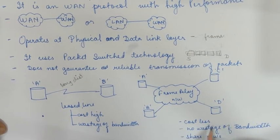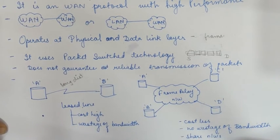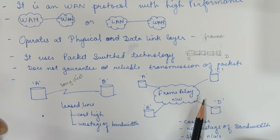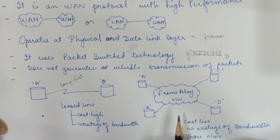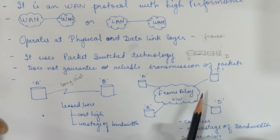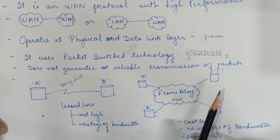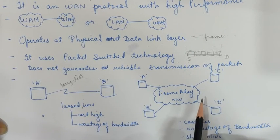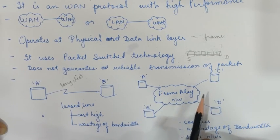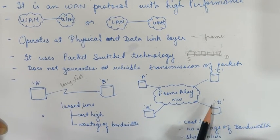In frame relay, you can communicate over long distances, but it also shares connections — meaning the bandwidth and network are shared. There is no wastage of bandwidth. The service provider manages and allocates specific bandwidth to specific cities or networks. Frame relay is very handy for sharing the network, and if you need more bandwidth, you simply pay more to the service provider.